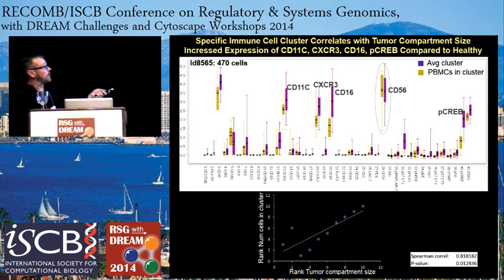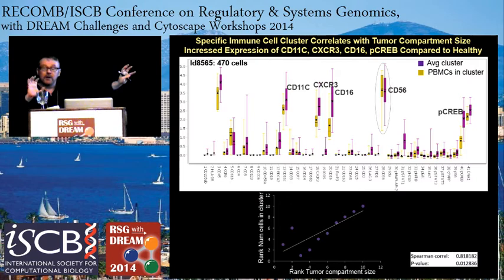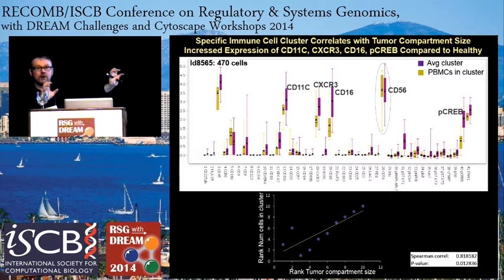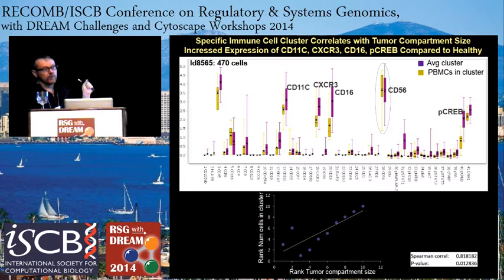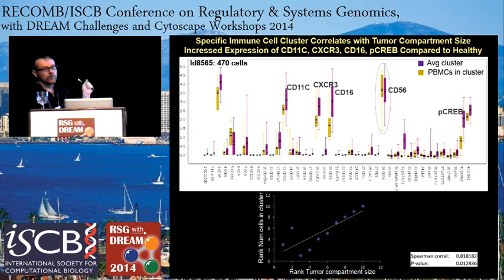We can do appropriate regressions and analyses to find immune cell subsets that correlate with tumor compartment size and particular tumor cell subsets — there's some kind of conversation between the tumor and immune system. The tumor is mostly trying to tell the immune system to leave it alone or feed it. We want to find what attributes of one compartment are telling us about what the other compartment is doing. We can find these correlations going both ways, and some of them are quite strong.